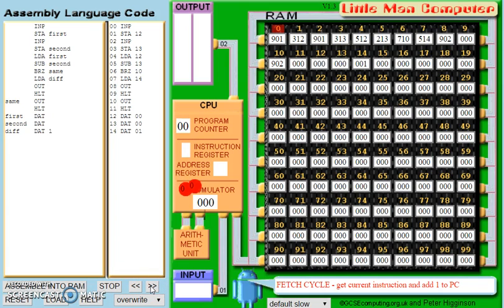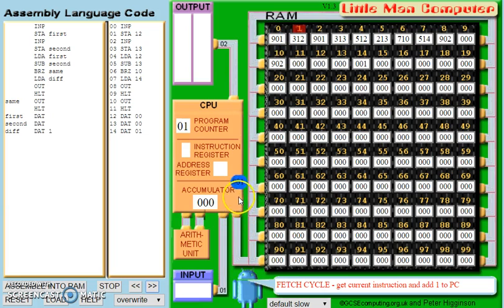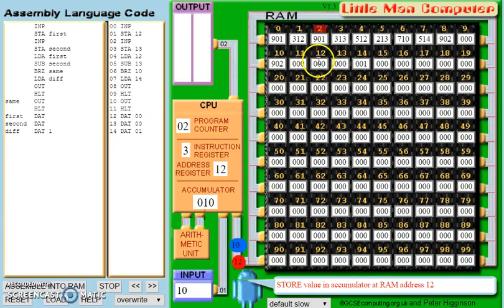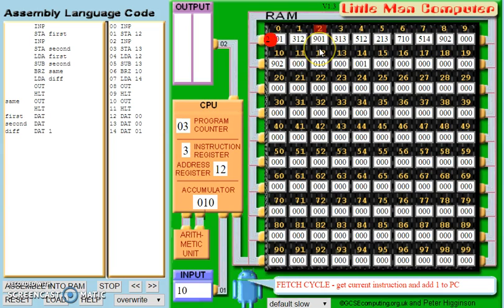Let's run our code. I'll run it a bit faster than our previous videos, as we've already seen these first few stages. So we're on instruction 0, which is going to be concerned with an input. We are fetching that code now and we're going to decode here. We've executed — the value we're going to put in is 10, and 10 will be stored in the accumulator. The program counter moves on and we are now on instruction number 1, which is concerned with storing the first variable in memory. We are now on instruction 2, which is going to be concerned with our second input.